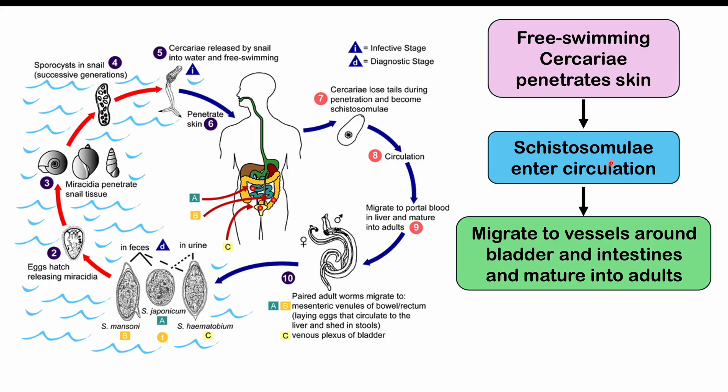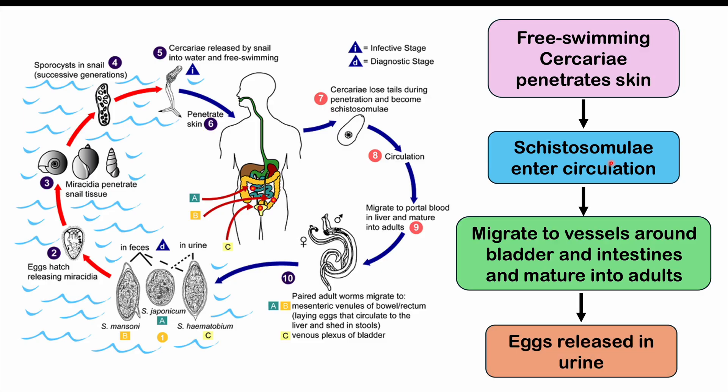The parasite enters those blood vessels and matures into adults. Those adults then start to reproduce and make eggs. With regards to Schistosoma hematobium specifically, the eggs are going to be released in urine — and that is a key point here.